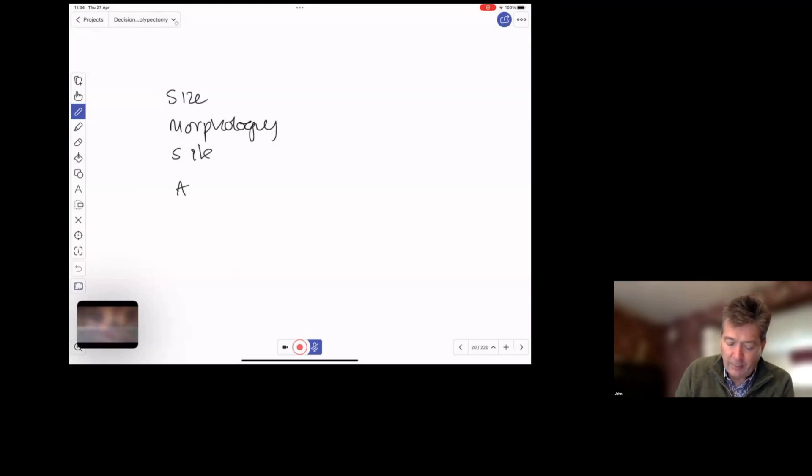There's a scoring system which maximizes at seven. Depending on the number, you are SMSA one, two, three, or four. Obviously as you move up through the SMSA scoring, the collective numbers increase. There's a range of scores depending on size, subdivided into five, morphology, site, and access.